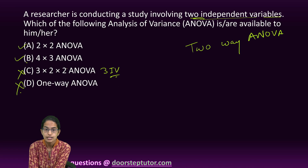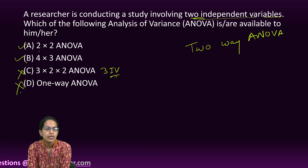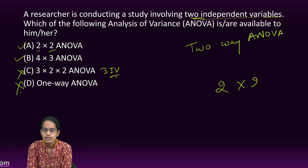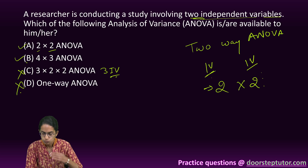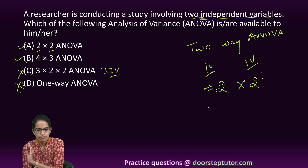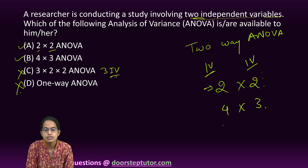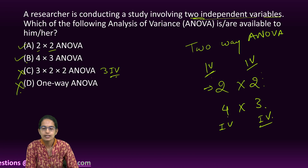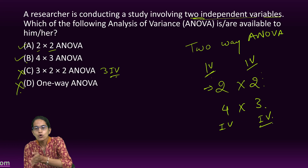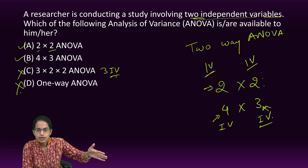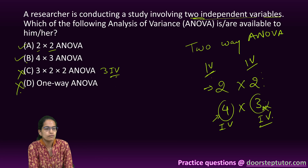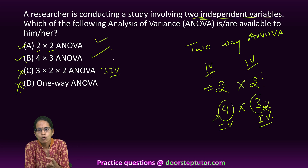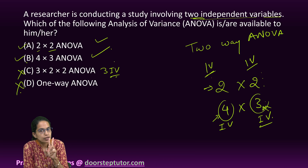Both A and B are correct examples of two-way ANOVA with two independent variables. A two-by-two design means two independent variables each with two levels — for example, low and high for each. A four-by-three design means one independent variable has four levels and the other has three levels. Both are examples of studies with two independent variables and are therefore two-way ANOVA designs.